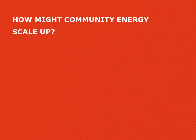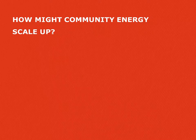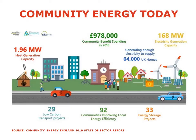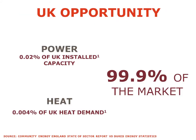In this section I will cover what is the current footprint of community energy today and therefore what is the market potential. The current capacity of community energy in the UK is fairly small: 168 megawatts of electricity and 2 megawatts of heat, which means it has a really small percentage of the current installed capacity for both power and heat. The current development is small, but that also means the current market available is quite big — 99% of the market is available for community energy to grow into.